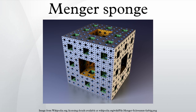Menger showed, in the 1926 construction, that the sponge is a universal curve, in that every curve is homeomorphic to a subset of the Menger sponge, where a curve means any compact metric space of Lebesgue covering dimension one. This includes trees and graphs with an arbitrary countable number of edges, vertices and closed loops, connected in arbitrary ways.